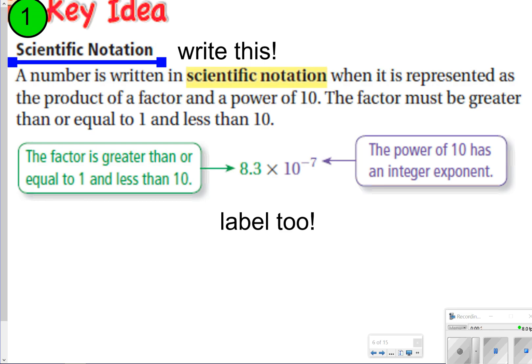You always want to write it as a power of 10, and it'll always have an exponent of an integer, meaning a positive or negative whole number. And then the first number here has to be between 1 and 9.9, so it has to be equal to 1 and less than 10.